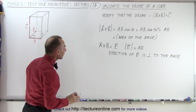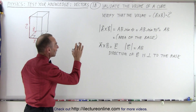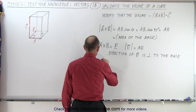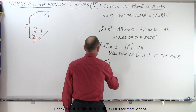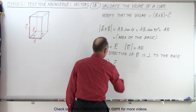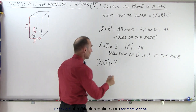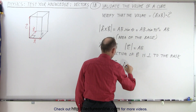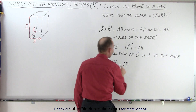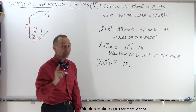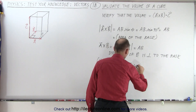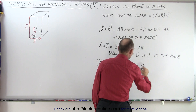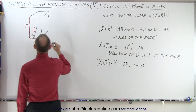Next we're going to take a cross b and multiply it with c via the dot product. So we have a cross b dotted with vector c. By definition that is equal to the magnitude of a cross b — which we now know is going to be the magnitude of a times the magnitude of b — times the magnitude of c, times the cosine of the angle between them, the cosine of phi. I need to use a different letter since I used theta already, so let's use phi.